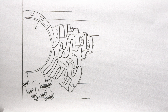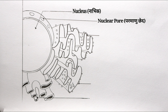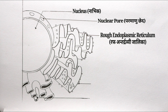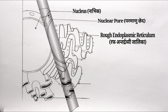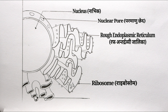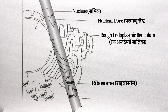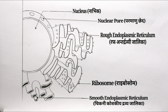The first label is nucleus. Next one — I have already told you — is nuclear pore. The third one is rough endoplasmic reticulum. The fourth one is ribosomes. And the last one is smooth endoplasmic reticulum. I hope you enjoyed this labeling exercise.